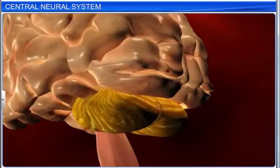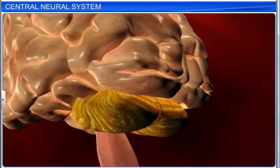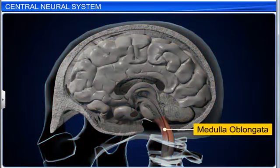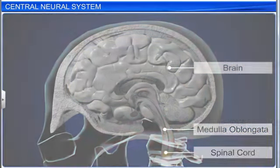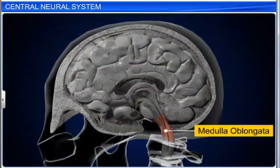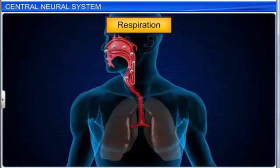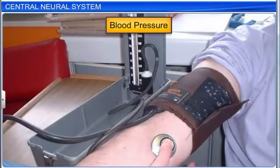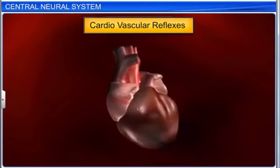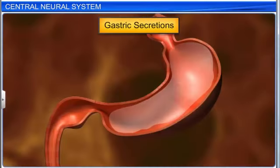This part of the brain is responsible for coordinated body movement, or balance of the body. The medulla oblongata acts as a link between the brain and spinal cord. The centers in the medulla oblongata control involuntary activities such as respiration, blood pressure, cardiovascular reflexes, and gastric secretions.